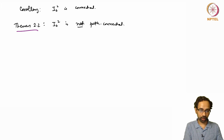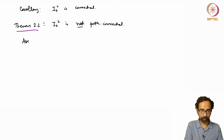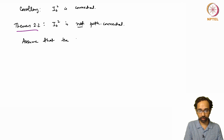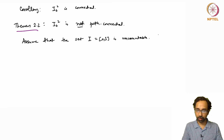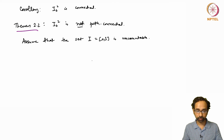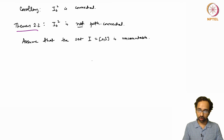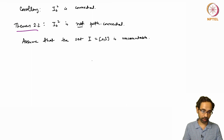To show the ordered square is not path connected, we will assume that the unit interval I is uncountable. We will prove this topologically later in the course, but for the moment assume it. Given that I is uncountable, we prove that the ordered square is not path connected.